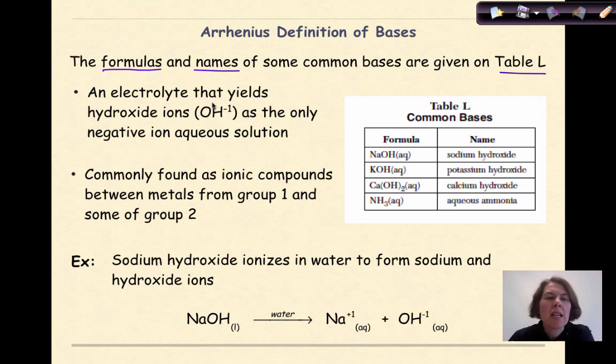A base is an electrolyte that yields hydroxide ions, OH minus 1, as the only negative ion in an aqueous solution, commonly found as ionic compounds between metals from group 1 and some from group 2. So here's an example. Sodium hydroxide ionizes in water to form sodium and hydroxide ions. So we see that sodium is coming from group 1 and it breaks down to individual ions.